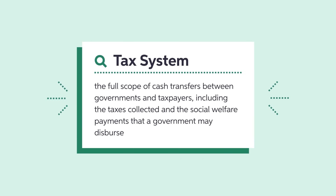A tax system encompasses the full scope of tax transfers between governments and taxpayers, including the taxes collected and the social welfare payments a government may disperse.